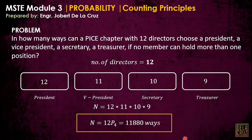Those are the basic counting principles — permutation and combination. I hope the difference between the two is clear. If you found this video helpful, please give it a thumbs up, like and share it with your colleagues. Thank you once again and bye bye everyone.